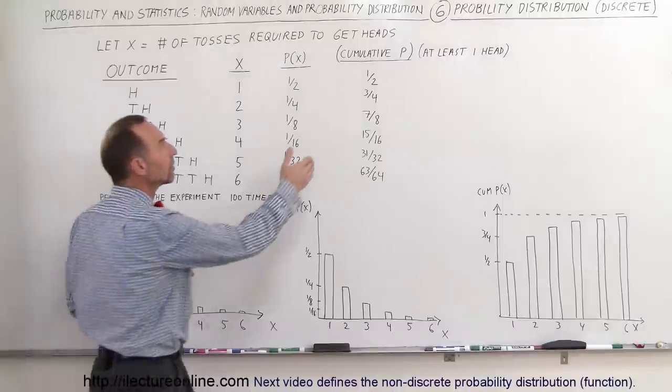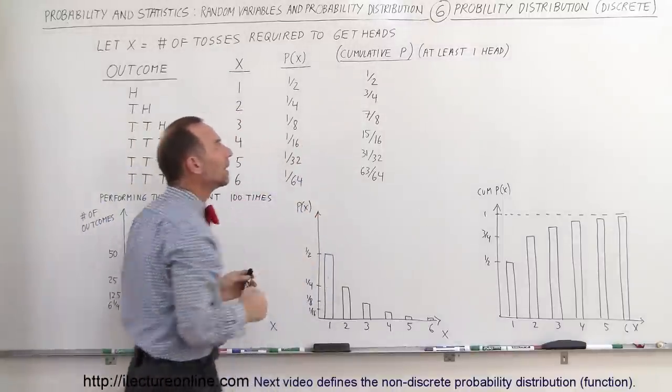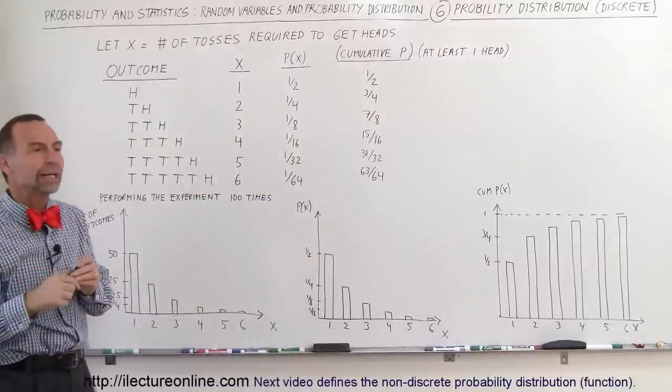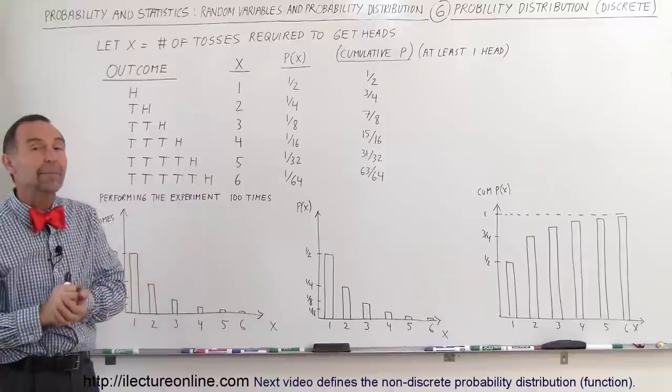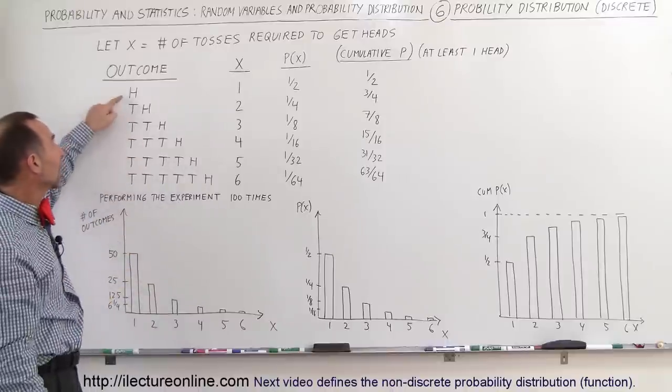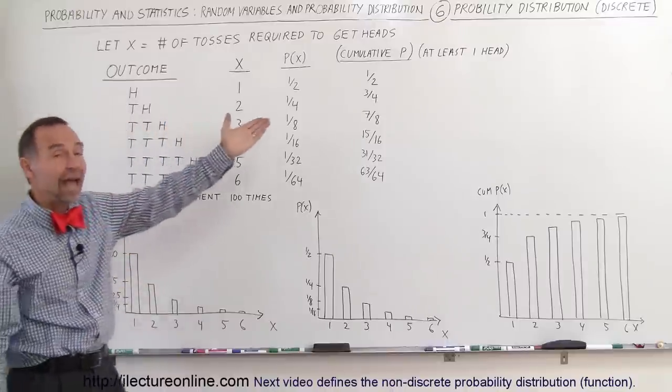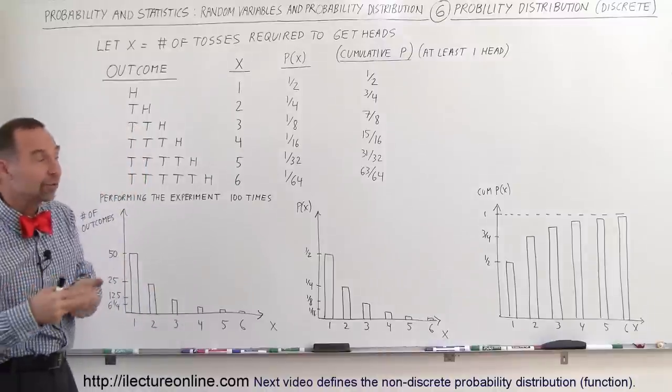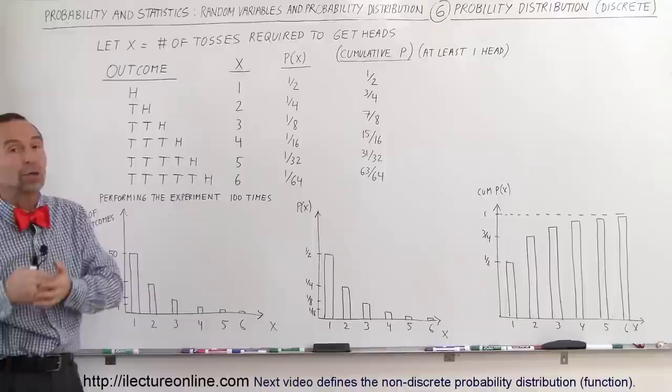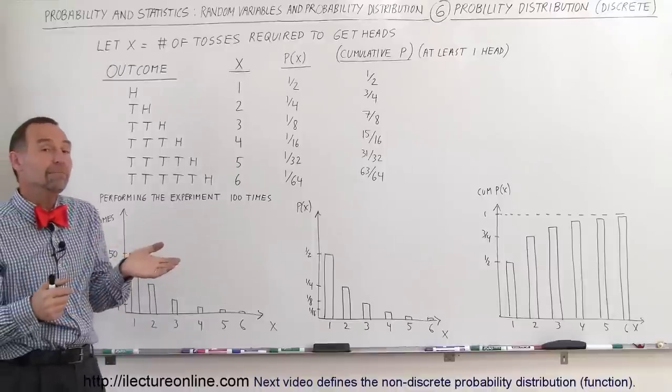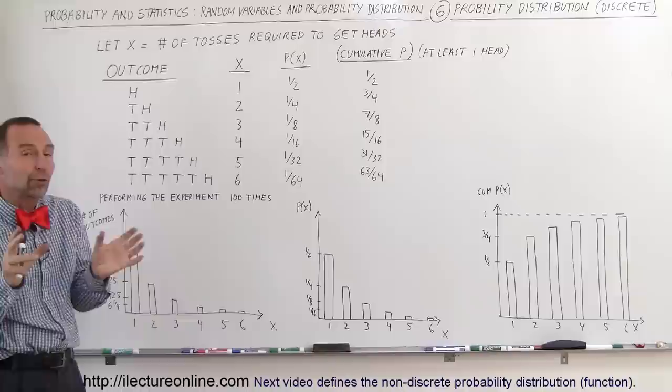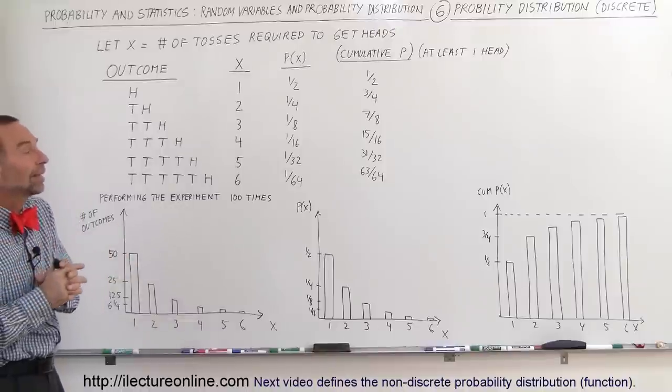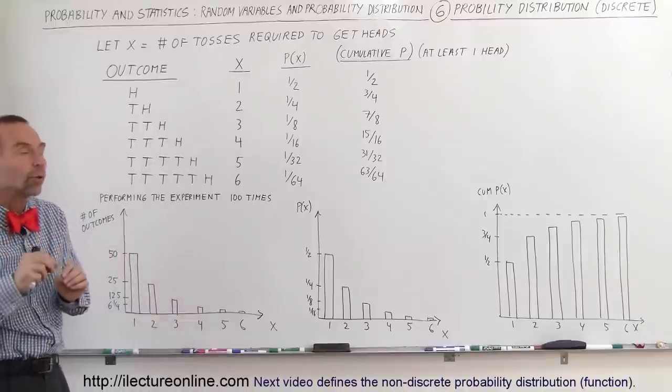Now, we also have a column here that shows us the cumulative probability, and it has to do with the probability that you'll get at least one head when you toss it that many times. For example, when you toss it once, the probability of getting a head is half. But if you toss it two times, the probability of getting heads is 3 quarters, because there's a 50-50 chance on the first time, 50-50 chance on the second time, so there's 3 quarters of a chance you'll get it either on the first or the second try.